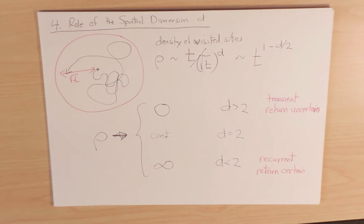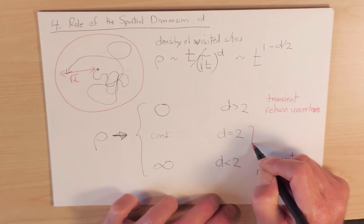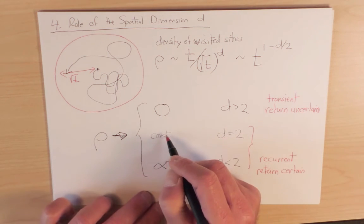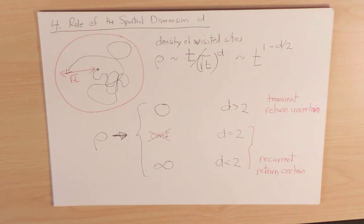The transition at d equals 2 is actually lying in the recurrent regime, because it turns out that this constant behavior is a result of this very crude, is a flaw of this very crude line of reasoning.